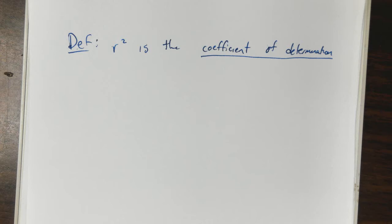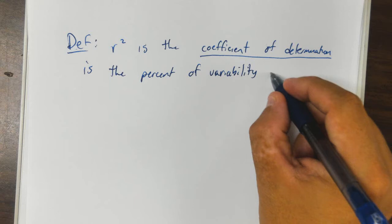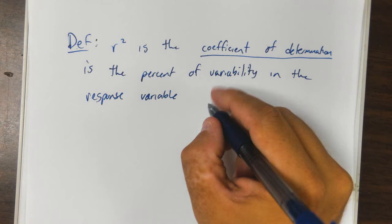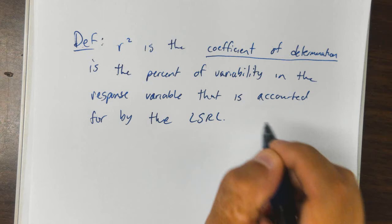This is kind of hard to explain, but it tells us how much better it is to use the least squares regression line than just to use the average of all the Y's. The definition would be the percent of variability in the response variable that is accounted for by the least squares regression line.